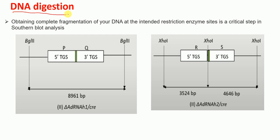The first step is DNA digestion. In this step, we digest genomic DNA at intended restriction enzyme sites using suitable restriction enzymes. I'm going to explain this process using two examples: Delta adRNAs1 Cre knockout and Delta adRNAs2 Cre knockout.